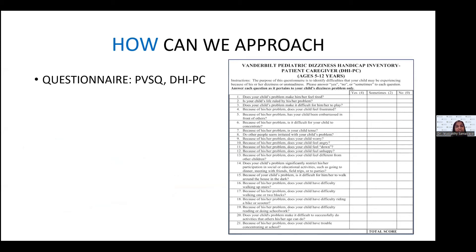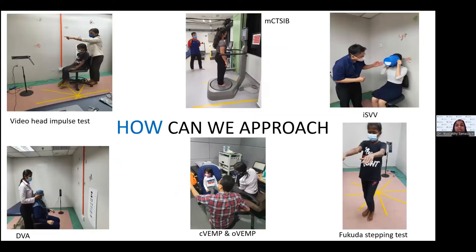Several questionnaires assess the child's overall vestibular function and symptoms. Here in UMMC, I use the Vanderbilt Pediatric Dizziness Handicap Inventory. There are also myriads of objective and subjective assessments to evaluate each part of the vestibular end organs. Briefly, there are five vestibular end organs which are paired: three semicircular canals and the otolith organs — the utricle and saccule. To assess the otolith organs, we use VEMP (vestibular evoked myogenic potential), either cervical or ocular. To assess semicircular function, we use the video head impulse test, which can assess each semicircular canal individually.